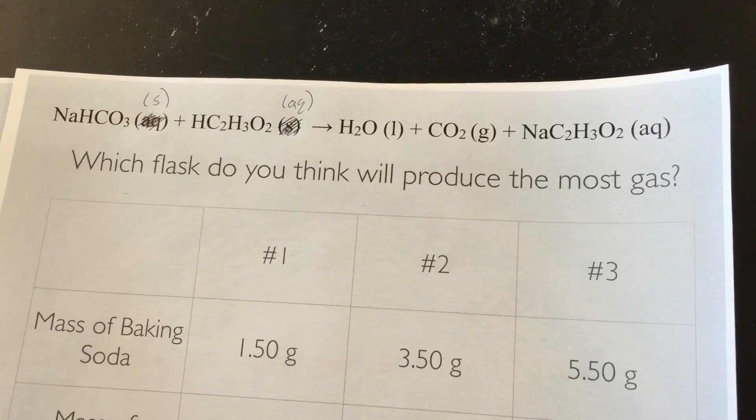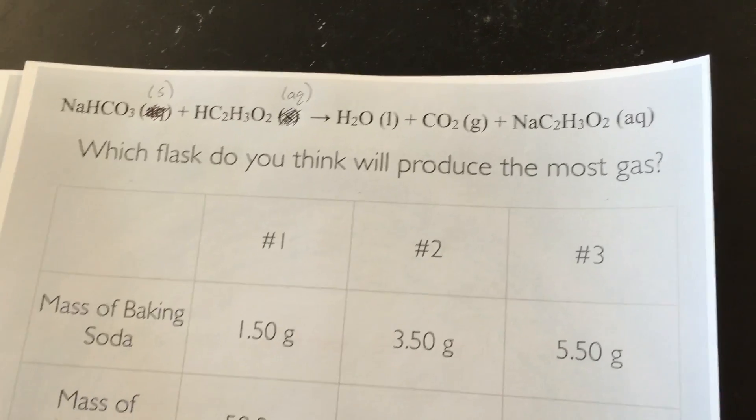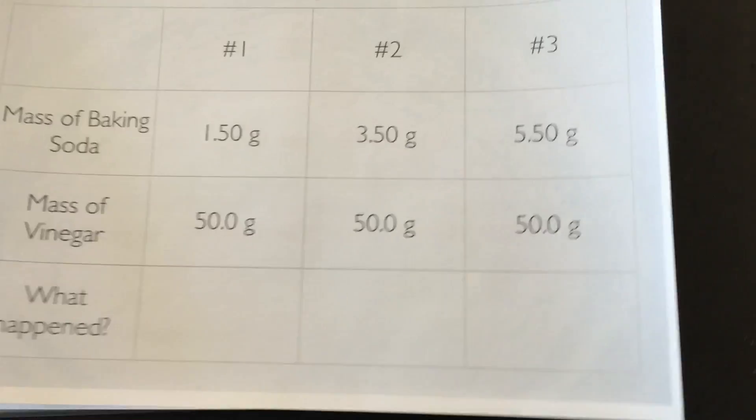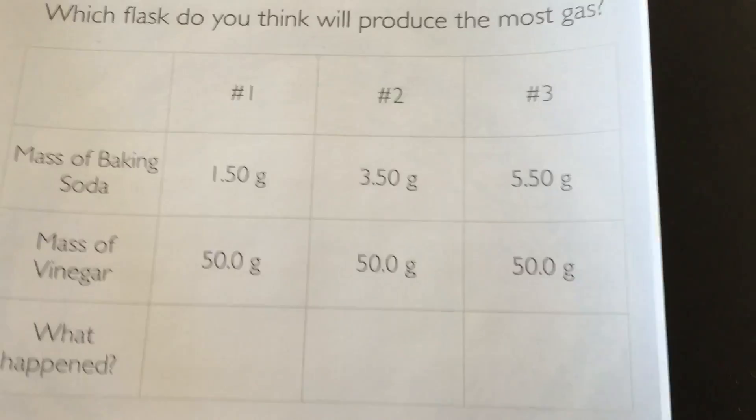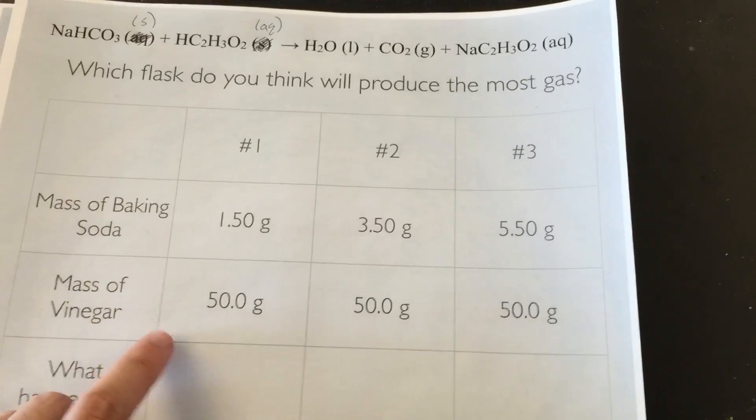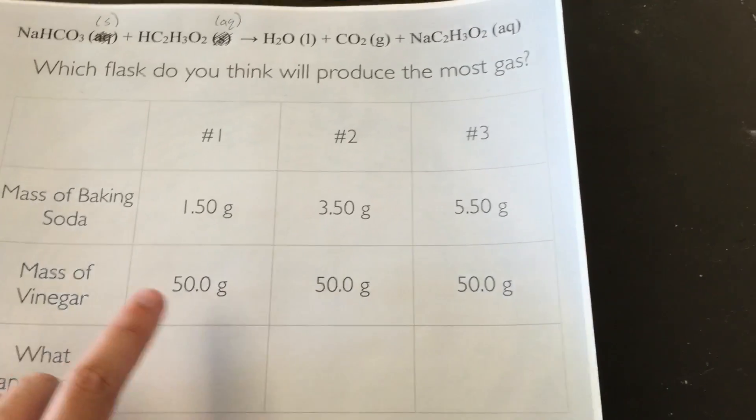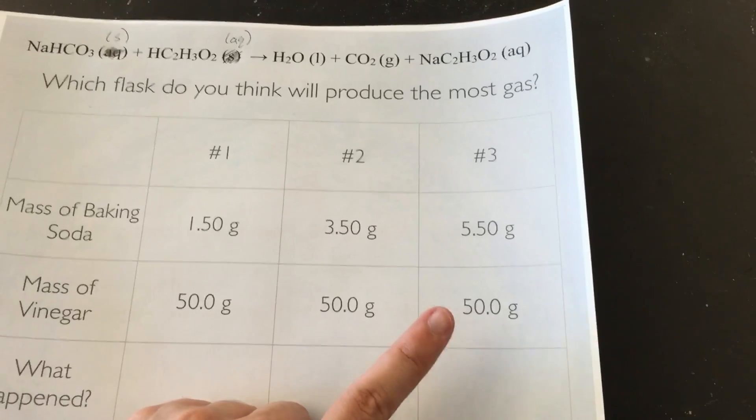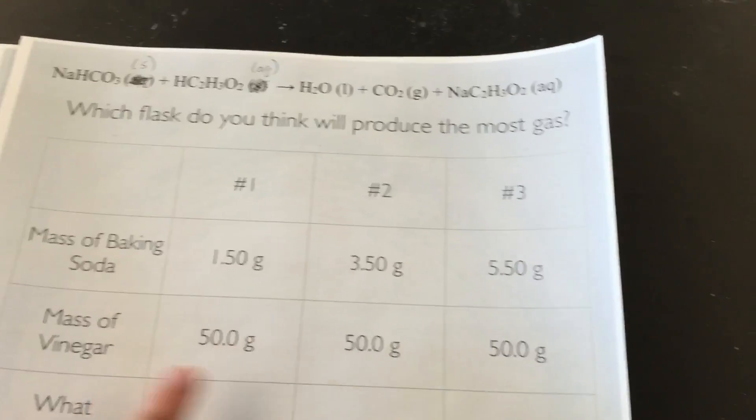So the question that you're going to be answering is which flask do you think will produce the most gas? So construct this table. I have three different flasks each with the same mass of vinegar in the bottom of them. So I have 50 grams, 50 grams, and 50 grams. So that's our constant.